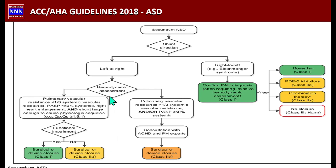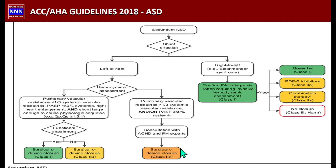If the hemodynamic assessment shows pulmonary vascular resistance greater than one-third of systemic resistance and pulmonary artery pressure greater than 50% of systemic pressure, this indicates fixed changes in the pulmonary vascular bed leading to pulmonary hypertension. These patients require consultation with a pulmonary hypertension specialist, and device or surgical closure is a Class IIb indication with uncertain outcomes.